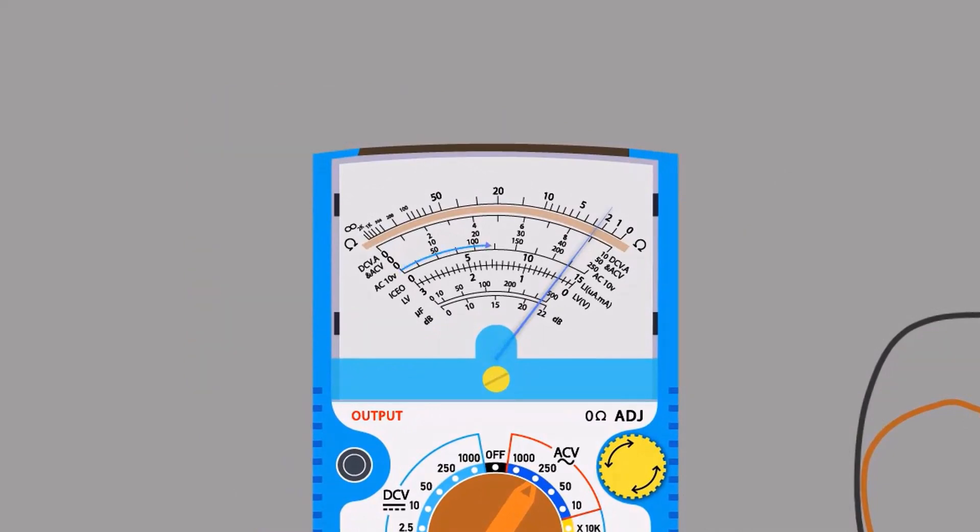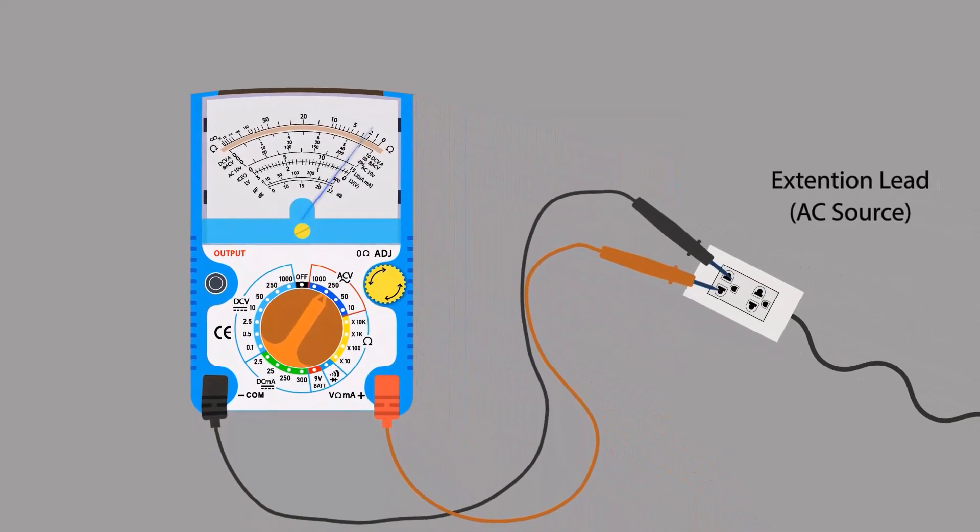We need to read 250 scale because we have selected 250 volts measuring range. Multimeter is showing about 225 volts. This is how we can measure AC voltage.